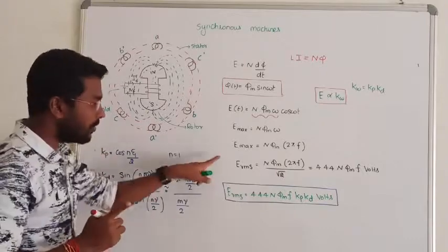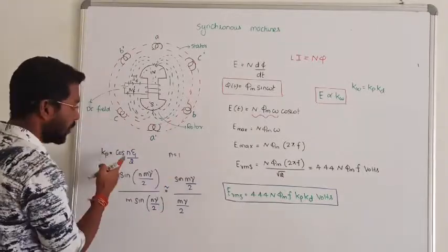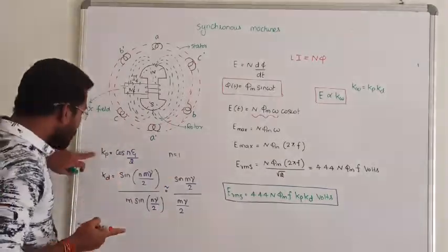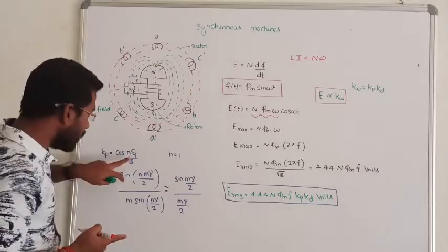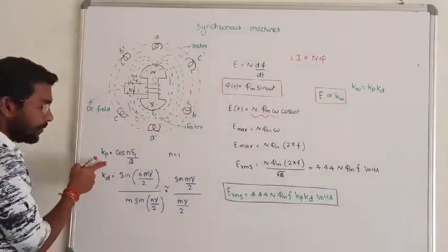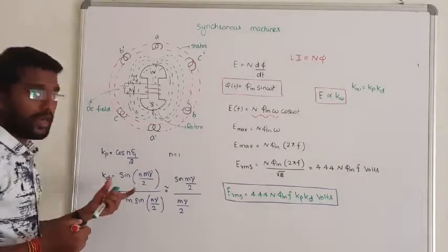In case of fundamental voltage, to find the RMS voltage for the fundamental, replace n by 1 in both the distribution factor and pitch factor formulas.